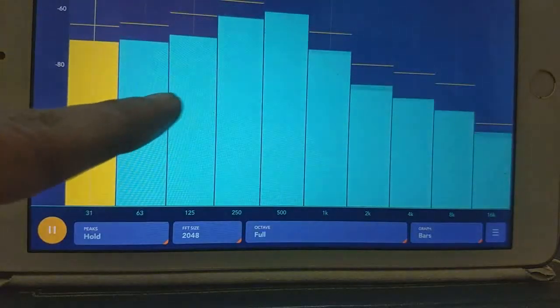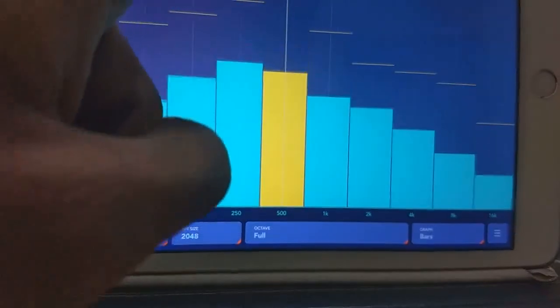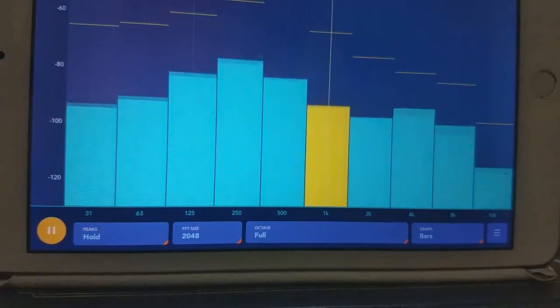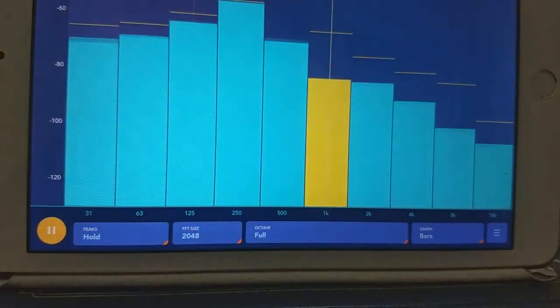You can also select any frequency that you want and you can actually get the dB level for that particular frequency. And this scale, the y-axis represents the dB level.